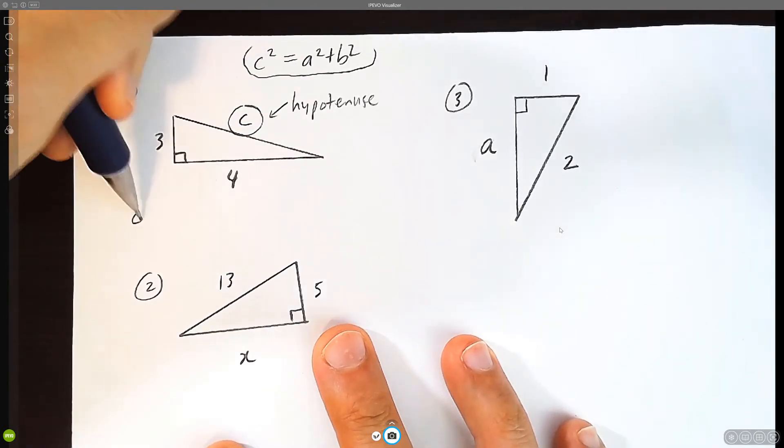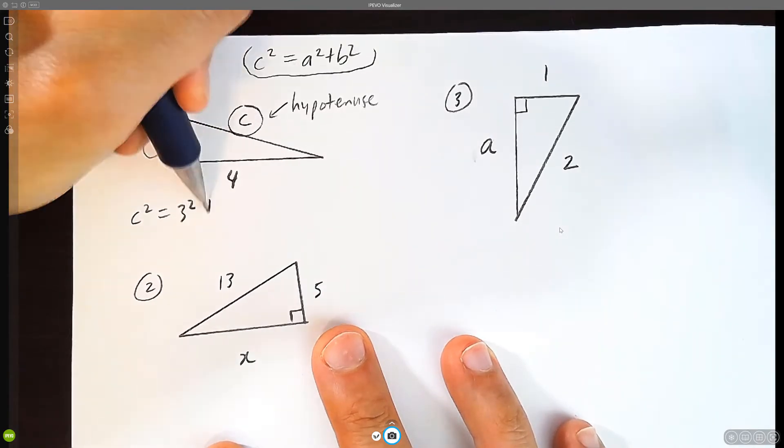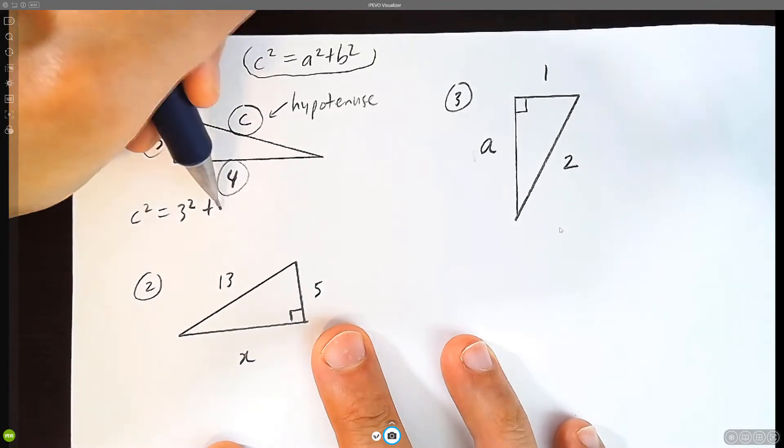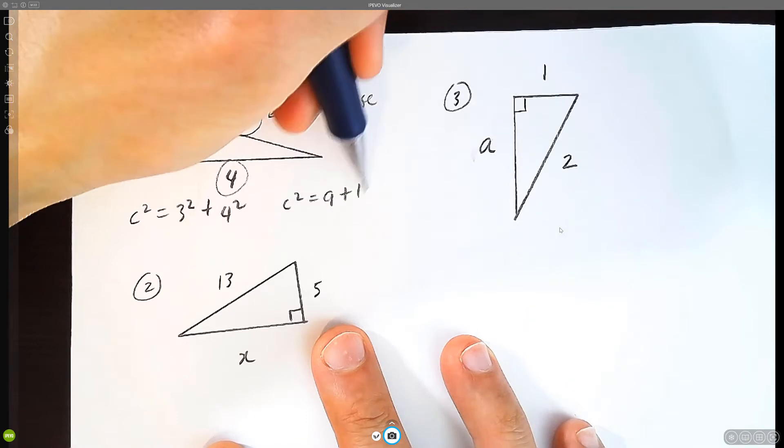So let's figure this out here. c squared equals one side squared, which is going to be three squared, plus the other side squared, which is going to be four squared.